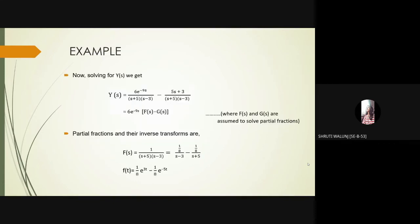Now solving for y of s, we get y of s is equal to 6 into e raised to minus 9s upon s plus 5 into s minus 3 minus 5s plus 3 upon s plus 5 into s minus 3, which equals 6 e raised to minus 9s into f of s minus g of s, where f of s and g of s are assumed to solve partial fractions.